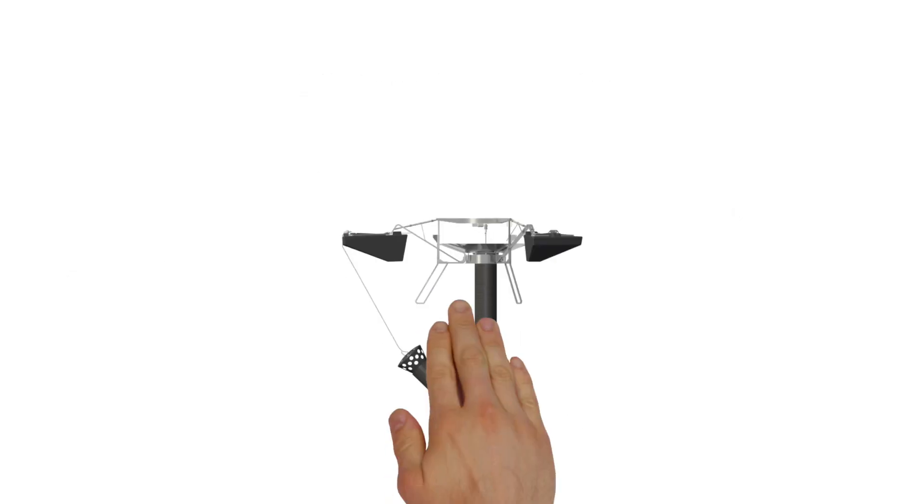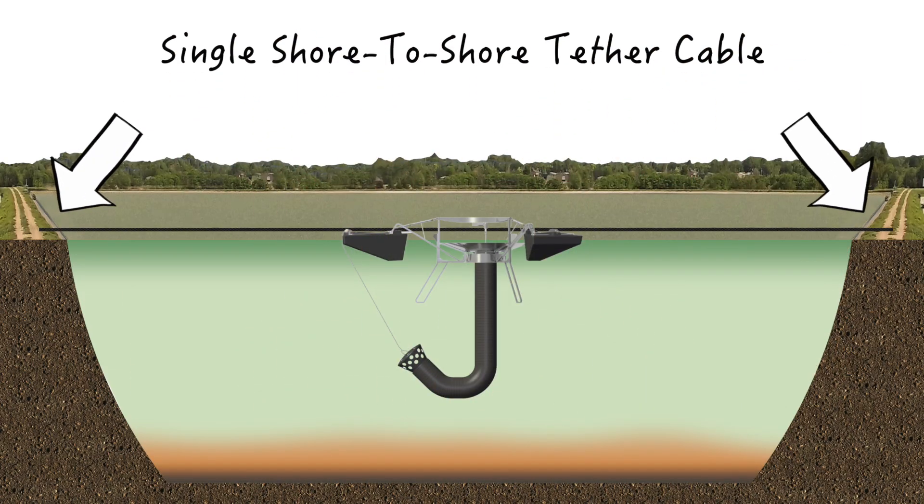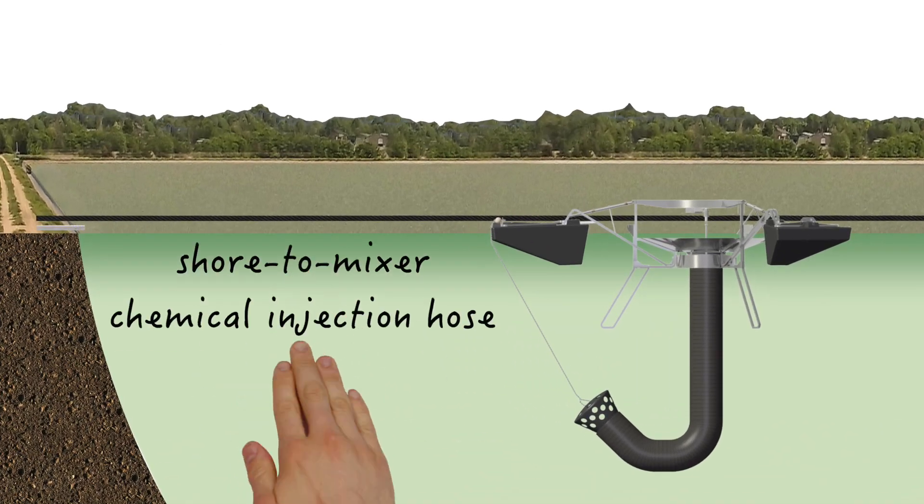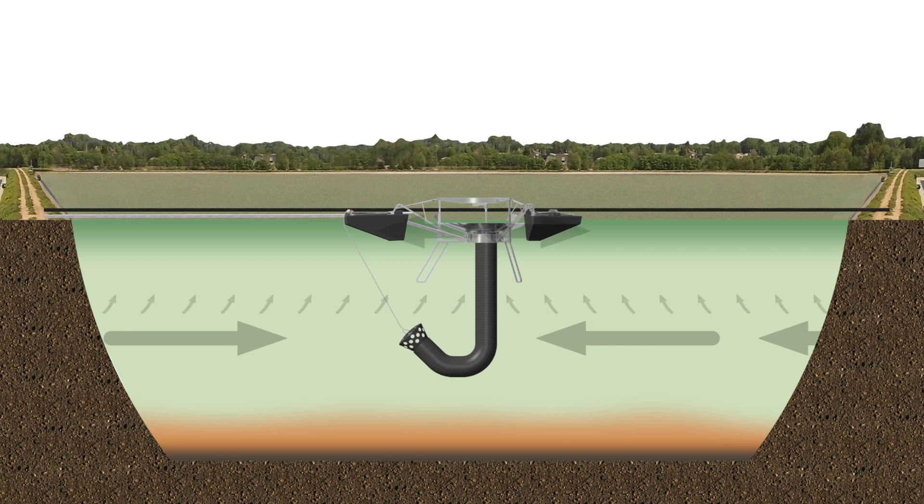And it all starts with a floating wastewater mixer. The mixer is anchored using a single shore-to-shore tether cable, which is able to span most lagoon dimensions. Once tethered, an injection hose is run from shore to the machine, fastened along the tether cable, terminating just below the machine impeller. And just like that, Medora's floating wastewater mixer is now ready to receive and distribute the phosphorus precipitant of your choice.